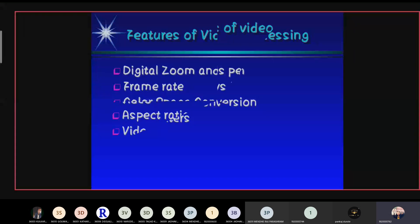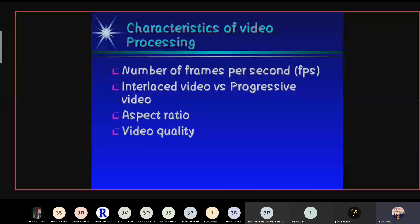Next slide is characteristics of video processing. First is number of frames per second. Frames per second is information used to store and display motion video. In film, video, and digital video, each frame is a still image which, when displayed in sequence, creates the illusion of motion.